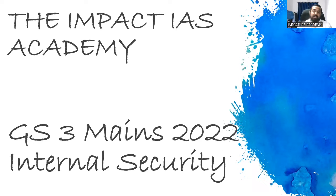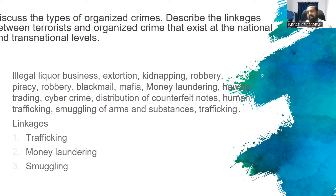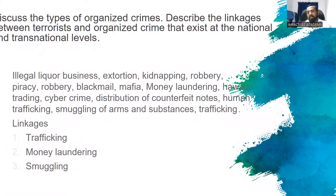Overall it is an easy-to-moderate paper. Let's look at the questions one by one. Types of organized crimes — whatever you can think of in your mind — whether it is blackmail, kidnapping, ransacking, sex trade, human trafficking, money laundering, cybercrime, ransomware, smuggling of counterfeit notes, or drug smuggling — all of these are forms of organized crime.